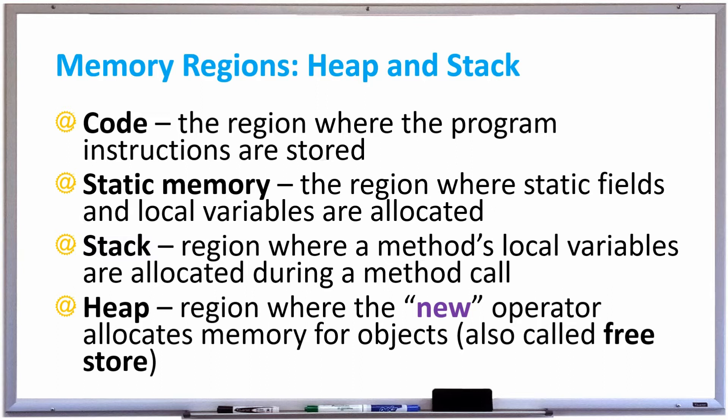The next one is static memory where static fields and local variables are allocated. Variables are declared inside methods using the keyword static, and those go to static memory.